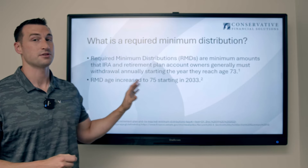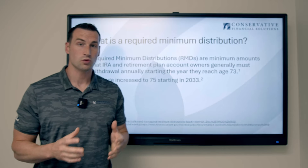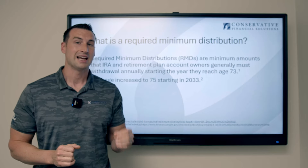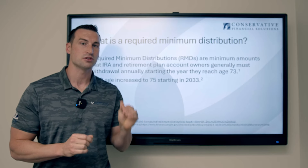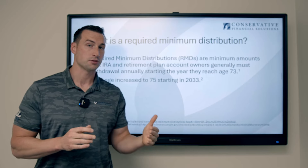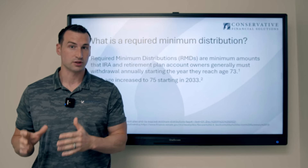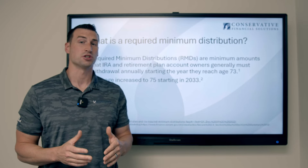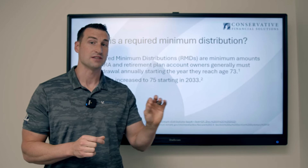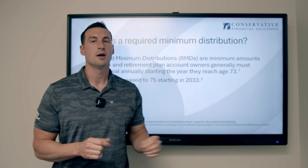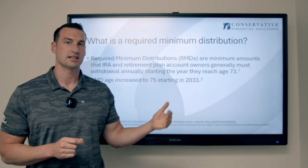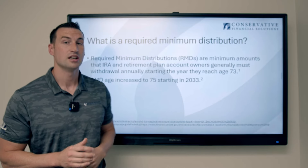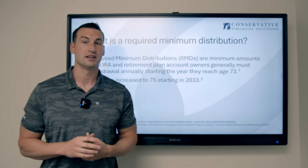There are a couple of exceptions. If you're still working and you're part of a 401k or an employer-sponsored plan, and that plan document allows you to delay your RMD while you're still active with the company, then you can actually delay your required minimum distribution until you retire. So if you're still working at age 73, that is one exception that can extend your RMD start date even beyond that.